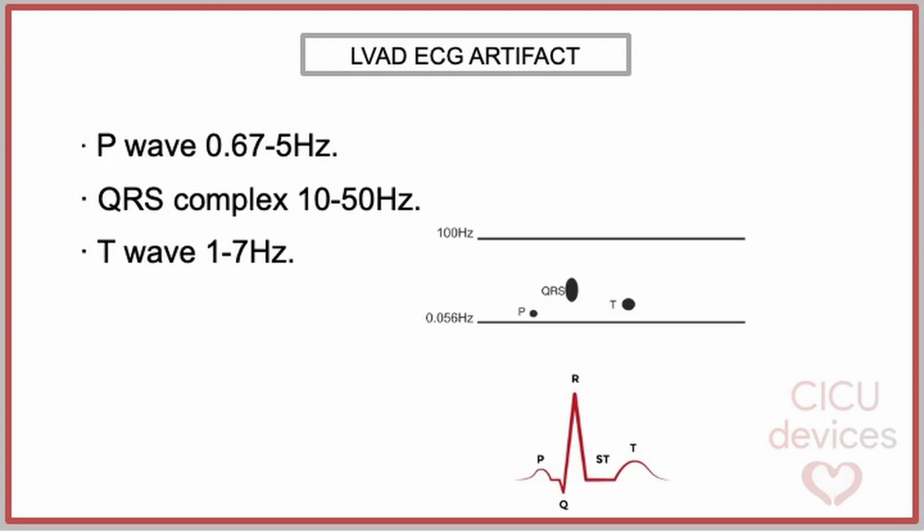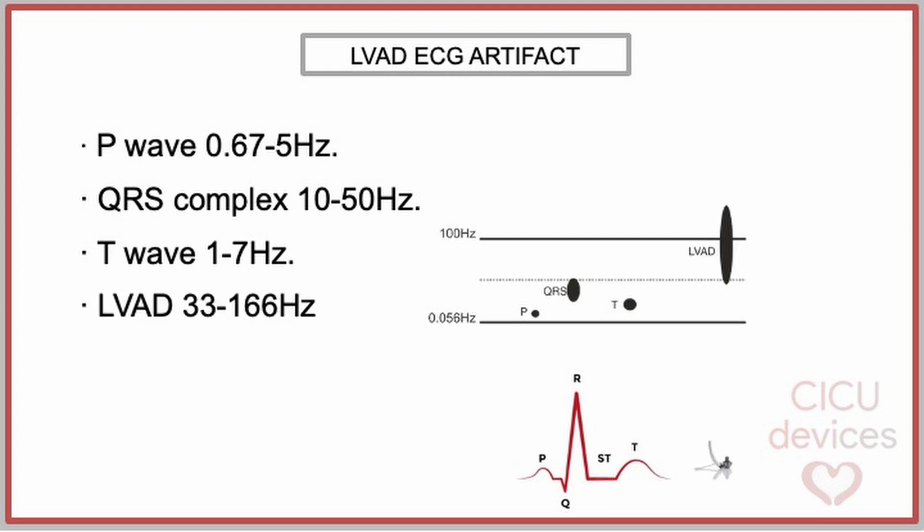In this slide, we present the typical wave frequencies in a normal ECG: P wave 0.67 to 5 Hz, Q or S complex 10 to 50 Hz, and T wave 1 to 7 Hz. As previously noted, the oscillation of an LVAD can range between 33 and 166 Hz.